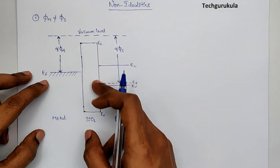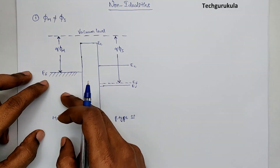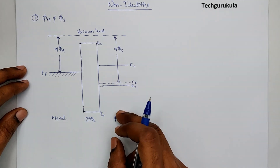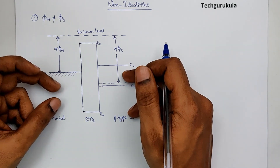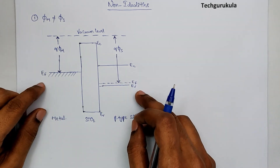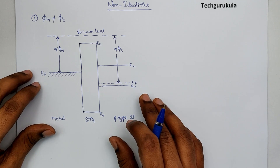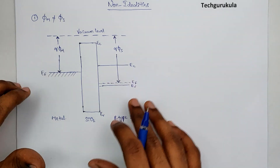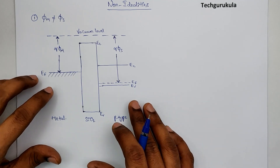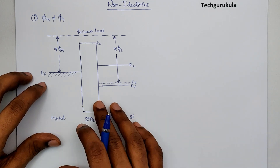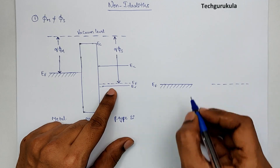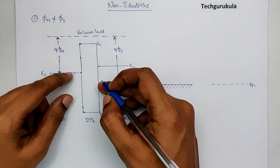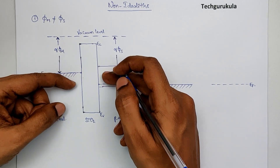When this MOS capacitor comes into equilibrium, the Fermi energy levels on either side should align so that there is no net current flowing. For that to happen, the energy of the semiconductor should increase and the metal should decrease, meaning some electrons are transferred from the metal to the semiconductor — or equivalently, holes are removed from the semiconductor. This can happen only if there is a connection to ground at the gate or semiconductor.